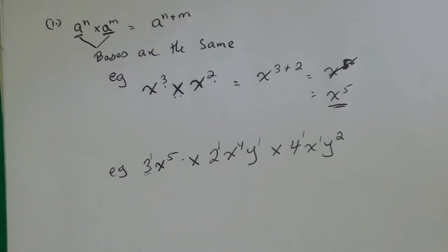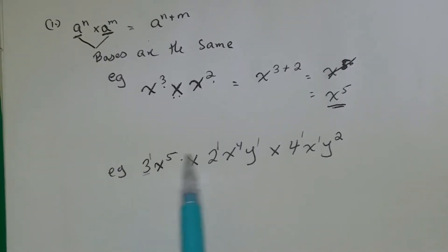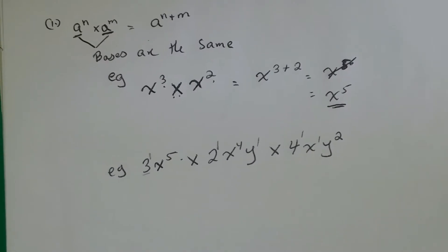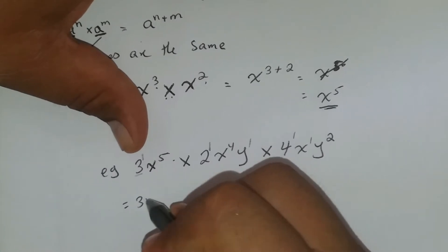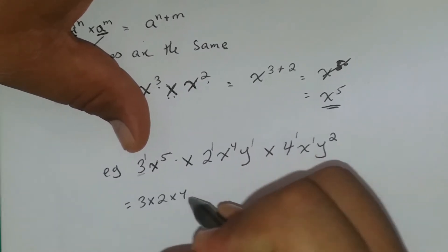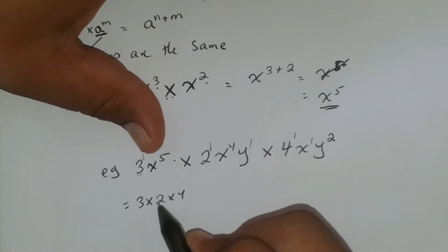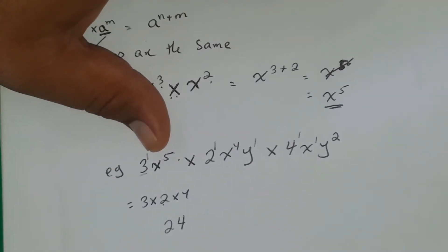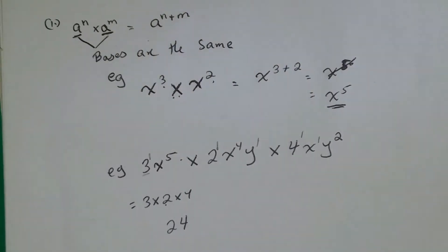Now look at the numbers 3, 2, and 4 — they are all different, so we cannot apply the law of indices for them. Instead, we simply multiply: 3 times 2 is 6, and 6 times 4 is 24. So the coefficient of the answer is 24.